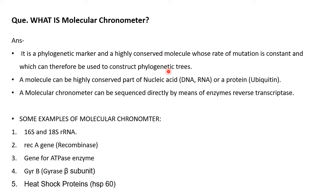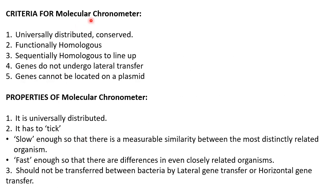The phylogenetic approach is where evolutionary relatedness is studied, and thus we need some genes or a part of nucleic acid which is highly conserved with no frequent mutations. The criteria for a molecular chronometer are: it is universally distributed and conserved, functionally homologous, sequentially homologous to allow alignment, genes do not undergo lateral transfer, and genes cannot be located on a plasmid.